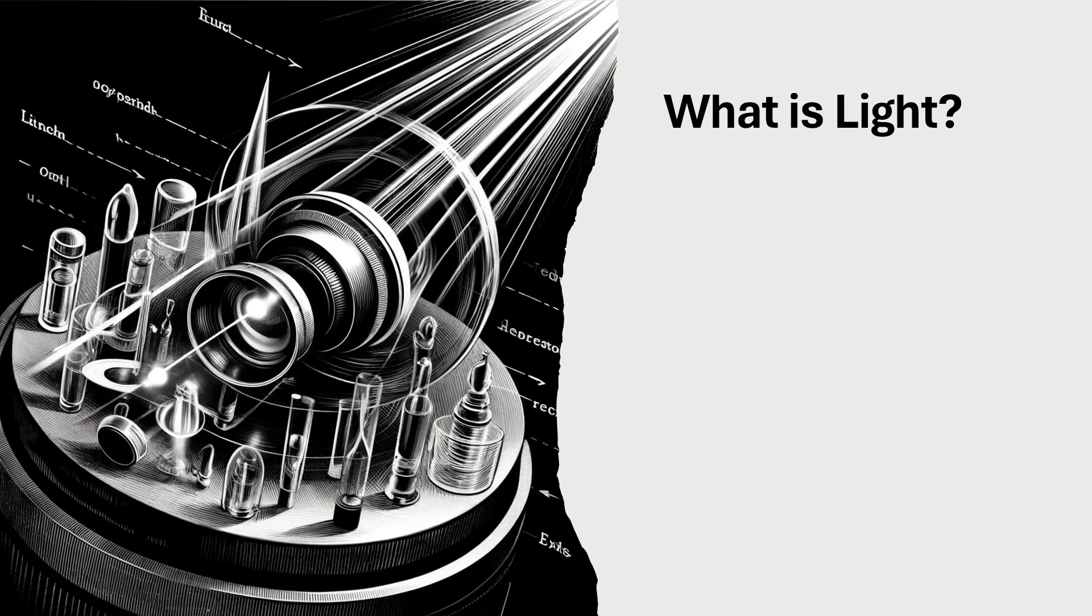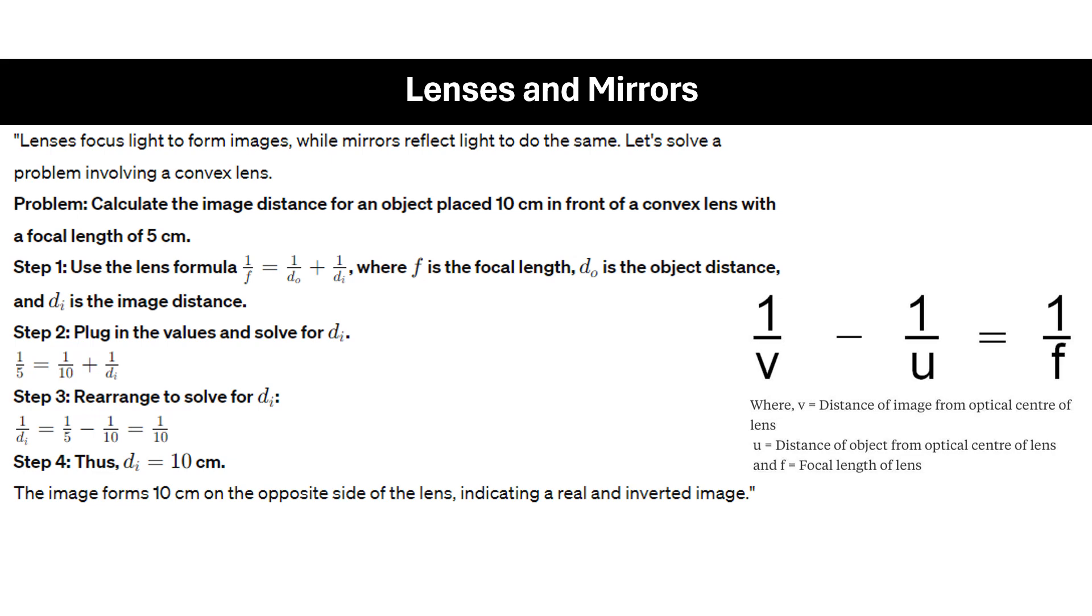Light travels at the fastest speed possible in the universe, about 299,792 kilometers per second. Light is designated C for our next topics in general and special relativity. In terms of meters per second, it can be written as 3.0 times 10 to the 8 meters per second.